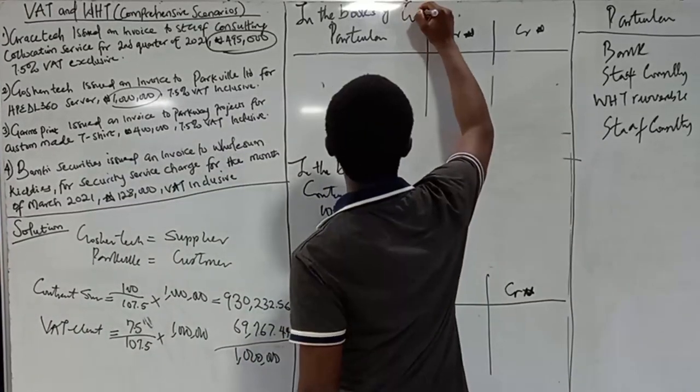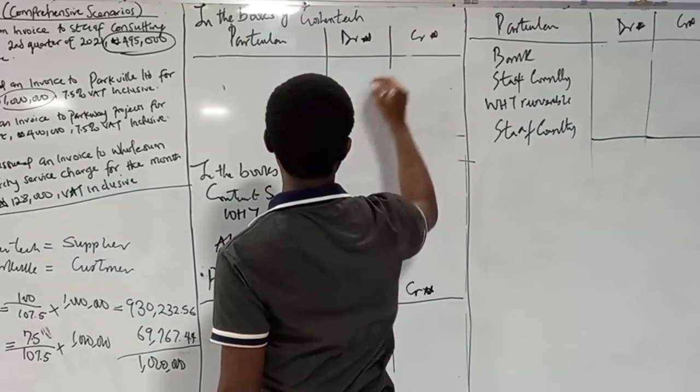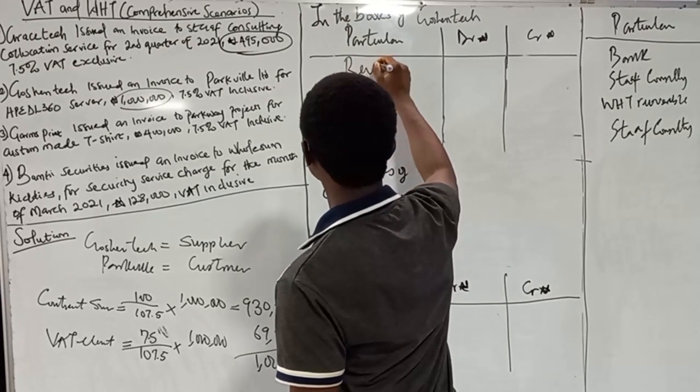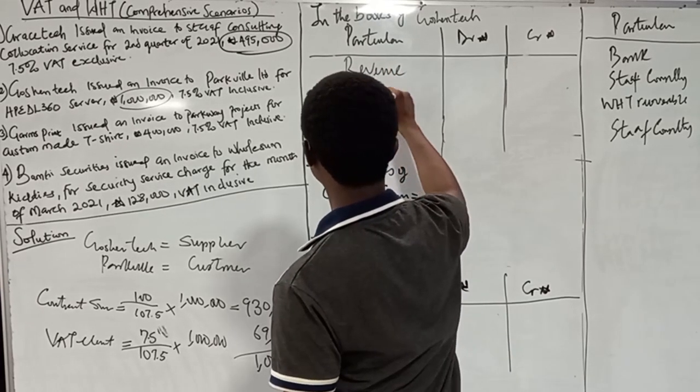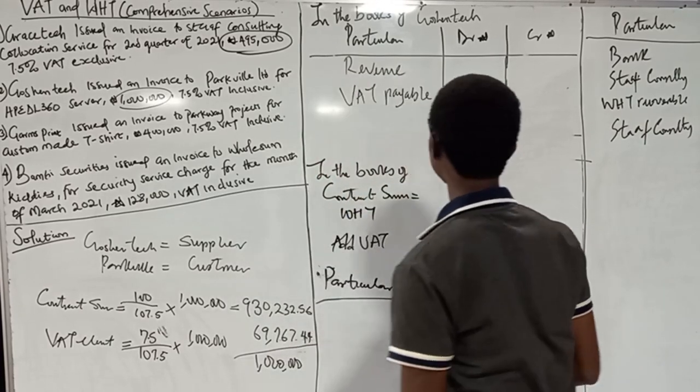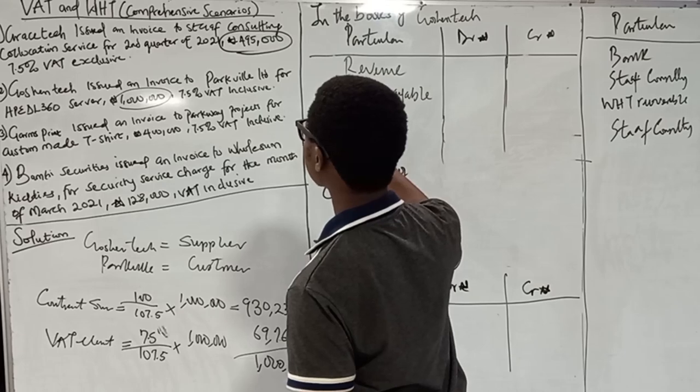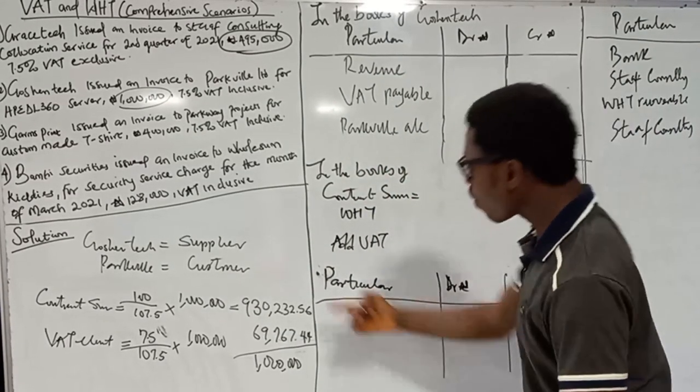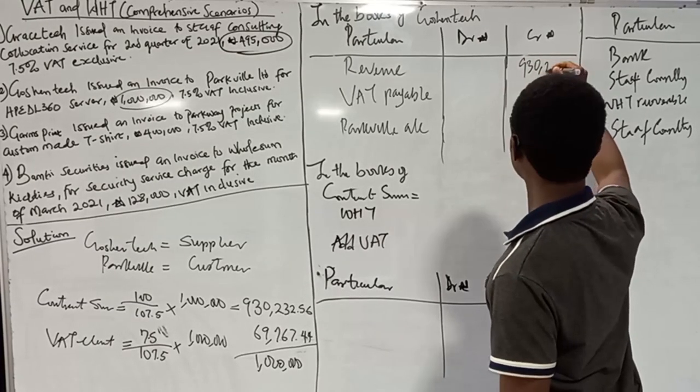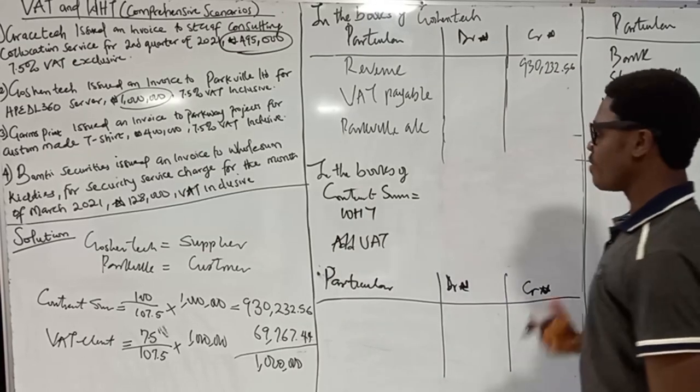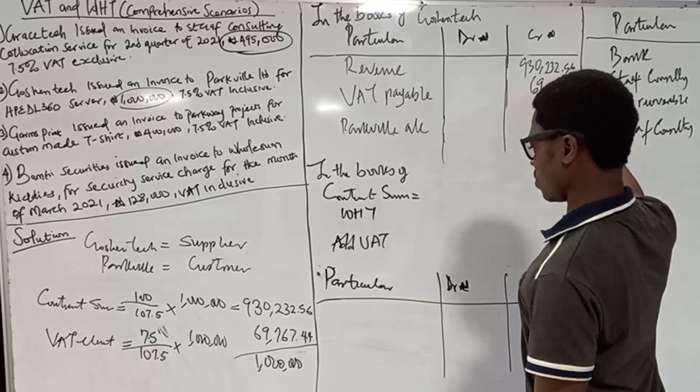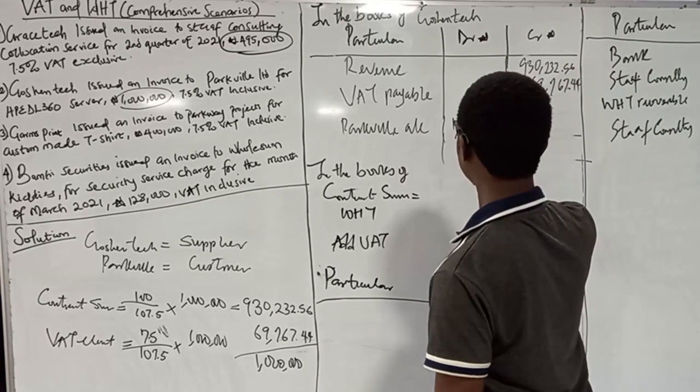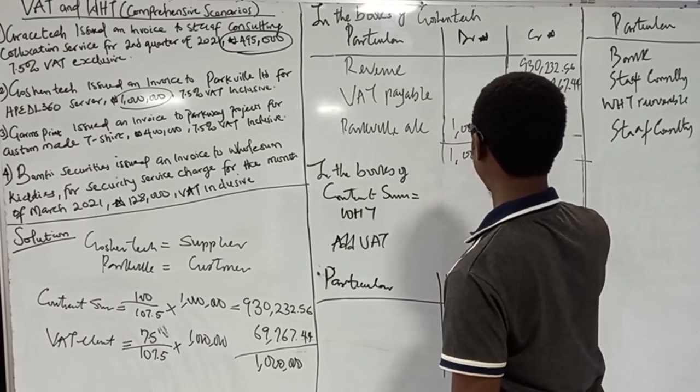The contract sum is 1,000,000 divided by 1.075, which is 930,232.56. The VAT is 69,767.44. Now, in the books of GraceTech, being the supplier and agent of government to charge, collect and remit VAT, we have the revenue account, the VAT payable account, and Parkville account. The revenue account will be credited with the contract sum 930,232, the VAT payable account will be credited with 69,767, and Parkville account will be debited with 1 million.